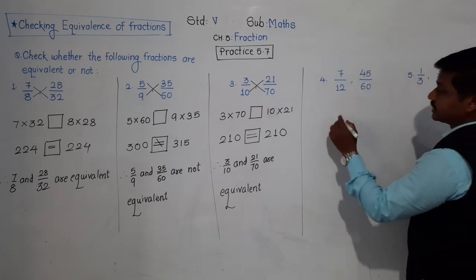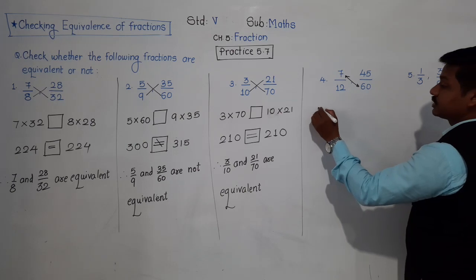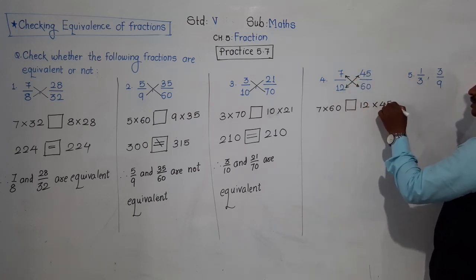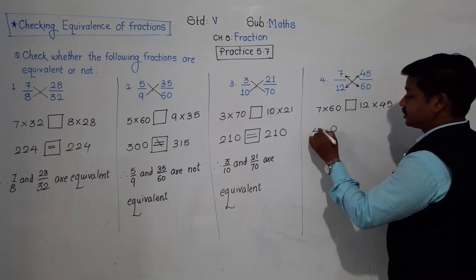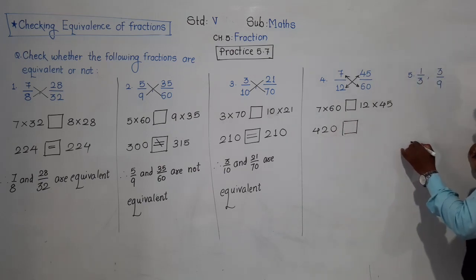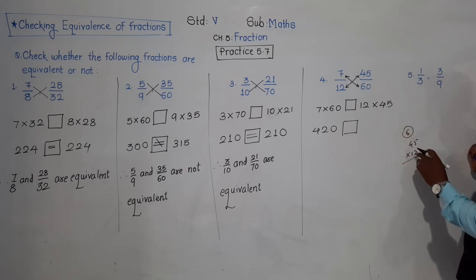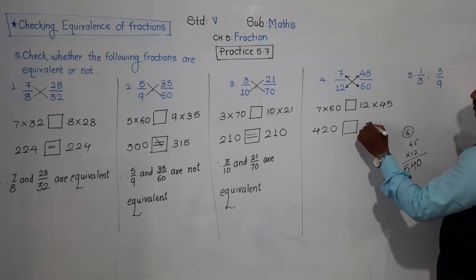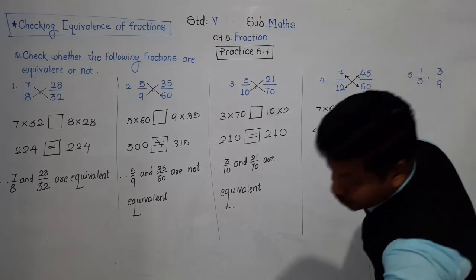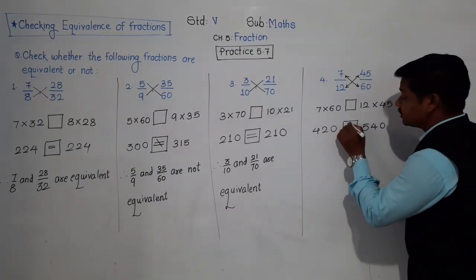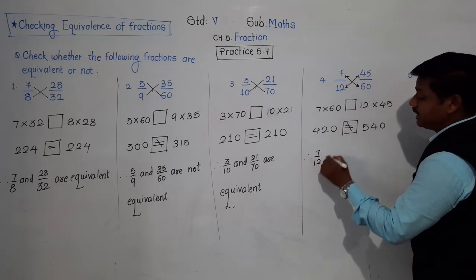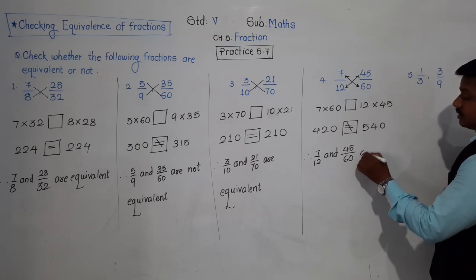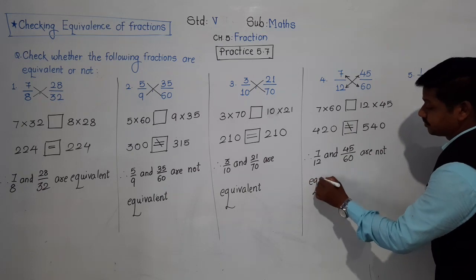Next: 7 upon 12 and 45 upon 60. Cross product: 7 into 60 — 7 zeros are 0, 7 sixes are 42, so 420. And 12 into 45 — 12 fives are 60, 6 carry; 12 fours are 48 plus 6 is 54 — so 540. The products are 420 and 540, which are not equal. So 7 upon 12 and 45 upon 60 are not equivalent.